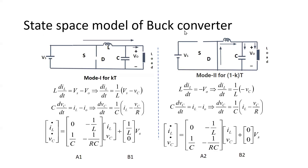We know that the buck converter can operate in two modes. The first mode is when switch S is in the ON condition and diode D is in the OFF condition. In mode 2, the switch will be in the OFF condition and the diode will be in the ON condition.